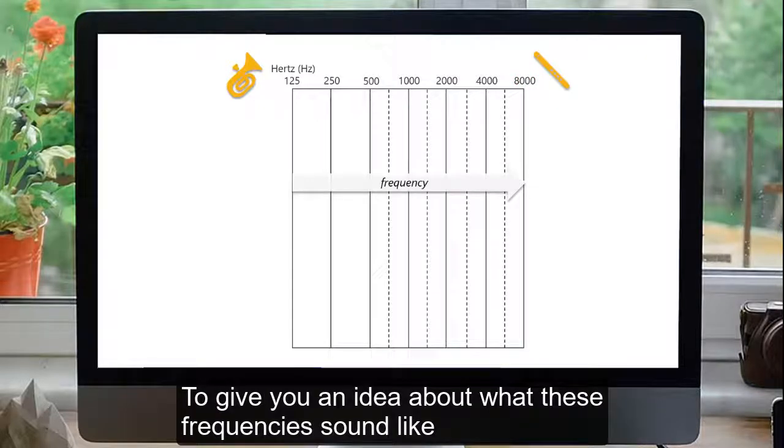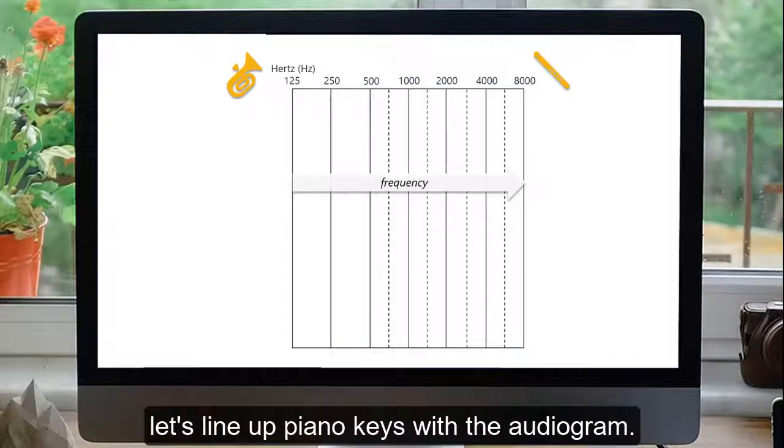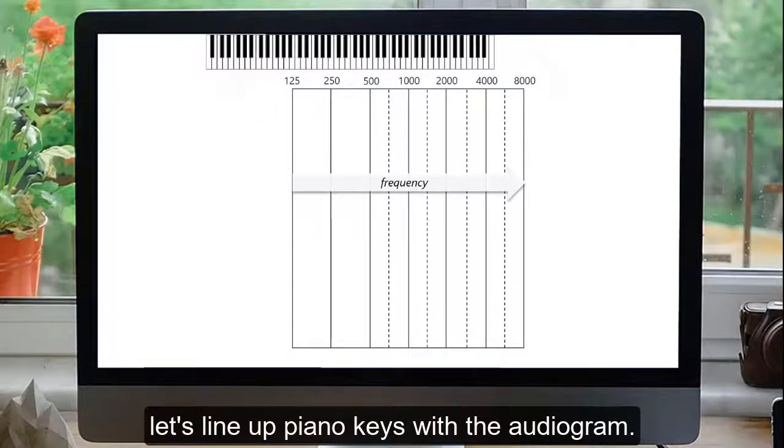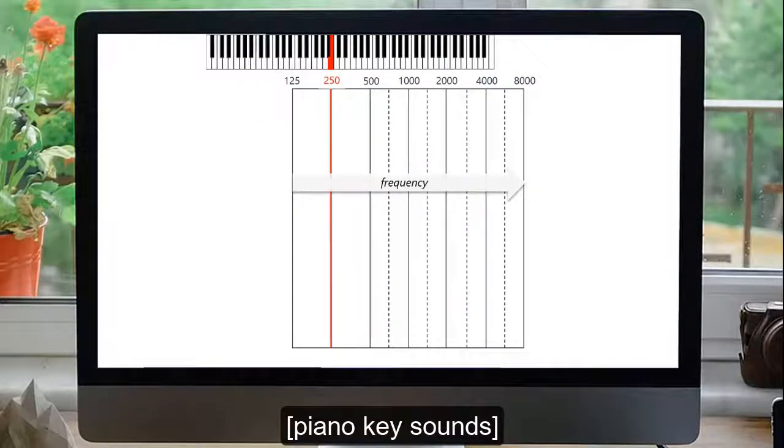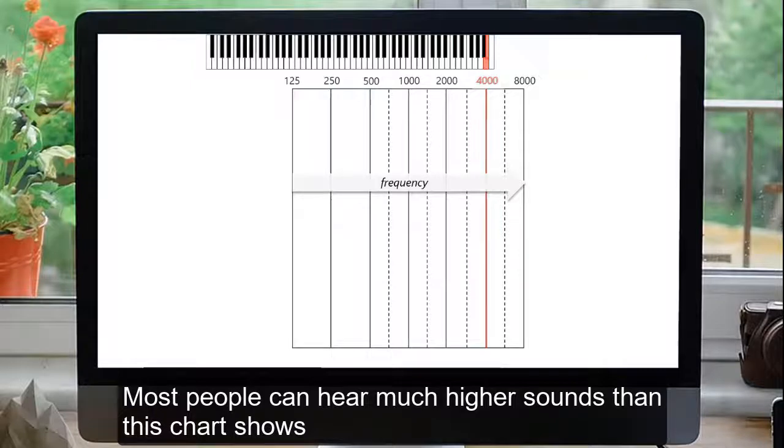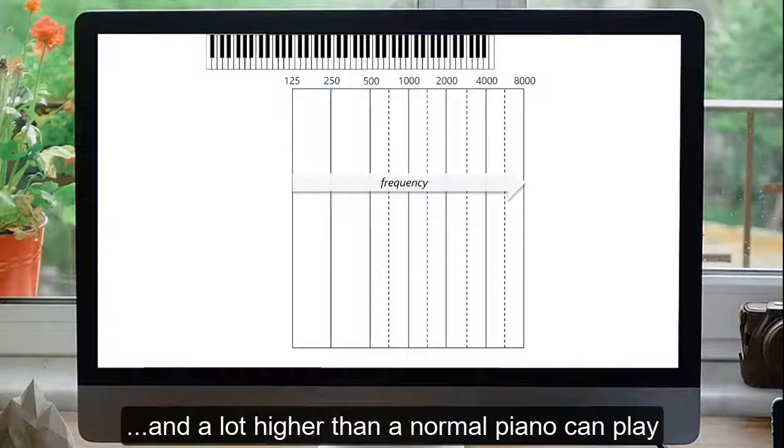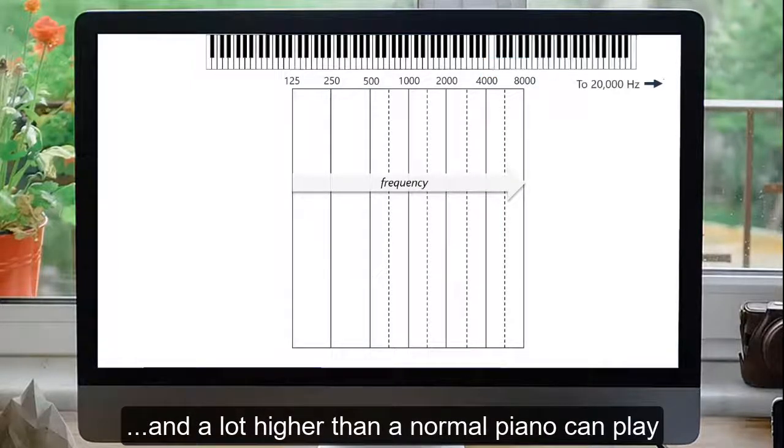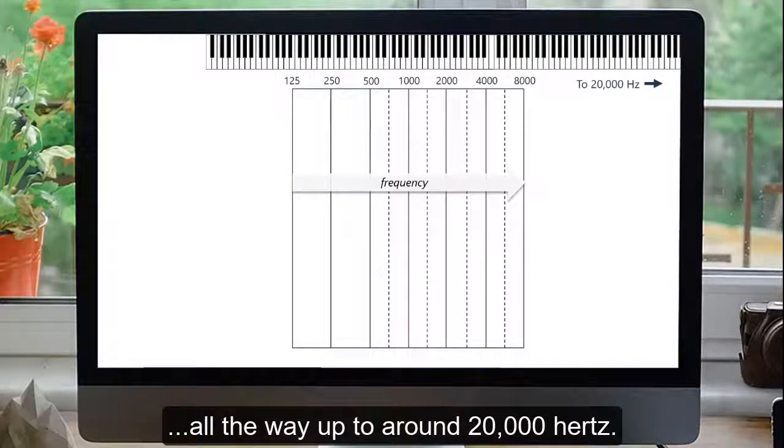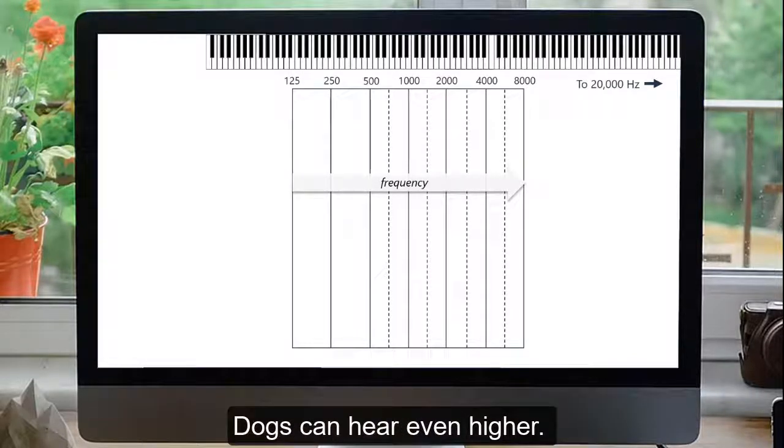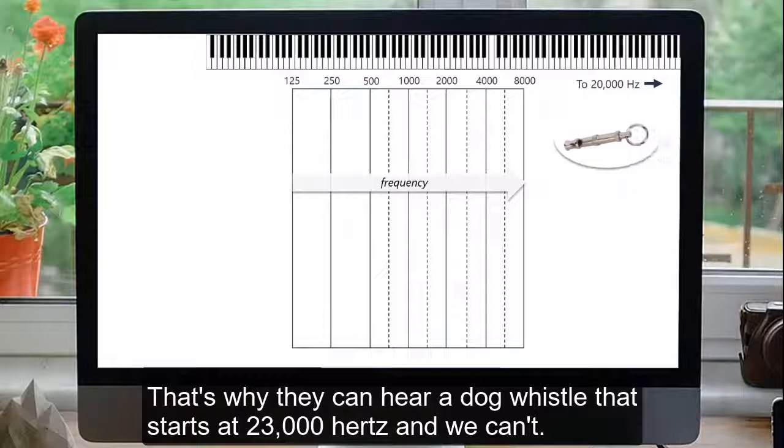To give you an idea about what these frequencies sound like, let's line up piano keys with the audiogram. Most people can hear much higher sounds than this chart shows, and a lot higher than a normal piano can play, all the way up to around 20,000 Hz. Dogs can hear even higher. That's why they can hear a dog whistle that starts at 23,000 Hz, and we can't.